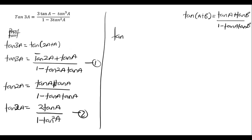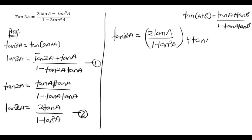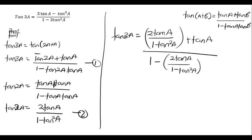So if we put equation 2 back into equation 1, we are going to get tan 3a. In place of tan 2a, we substitute 2 tan a divided by 1 minus tan squared a, plus tan a, all divided by the denominator: 1 minus tan 2a — which is 2 tan a over 1 minus tan squared a — multiplied by tan a.